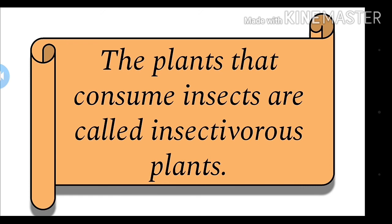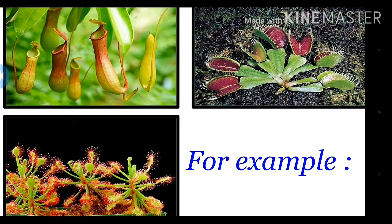Insectivorous plants attract insects with their beautiful colors. As the insects get attracted and come close, these plants capture and hold them. Some examples are: the pitcher plant, the Venus flytrap, and the sundew plant. These three are classic examples of insectivorous plants that give attraction to insects and catch them.